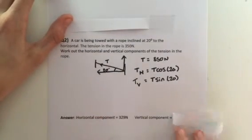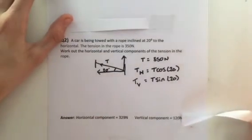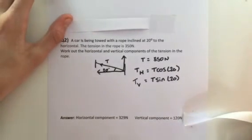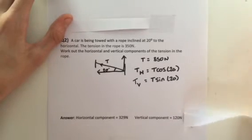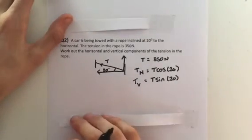And so here are the answers. The horizontal component is 329 newtons, so T cosine 20 is 329. And finally, the vertical component is 120 newtons. So well done if you got them all right.